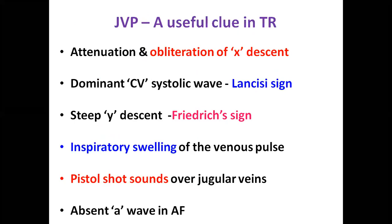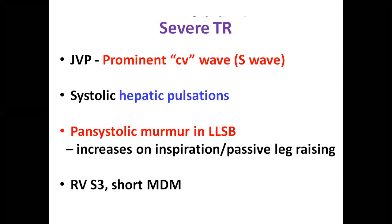JVP is a useful clue in TR — there will be a dominant CV wave, also called S wave or the NCC sign. Whenever there is a prominent V wave, a steep wide Y descent may be seen with inspiratory swelling of the venous parts. Findings in severe TR include prominent V waves, systolic hepatic pulsations, and pansystolic murmur in the lower left sternal border which increases on inspiration — Carvallo's sign. There may be RBBB and short MDM due to increased flow.